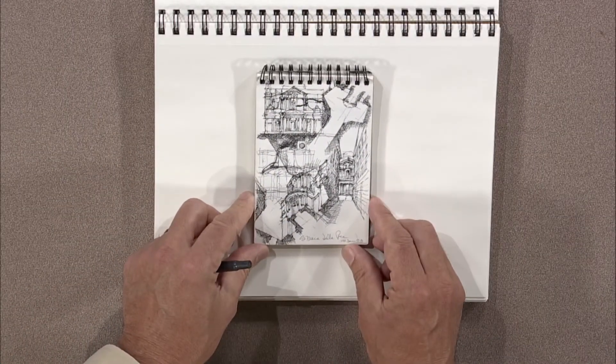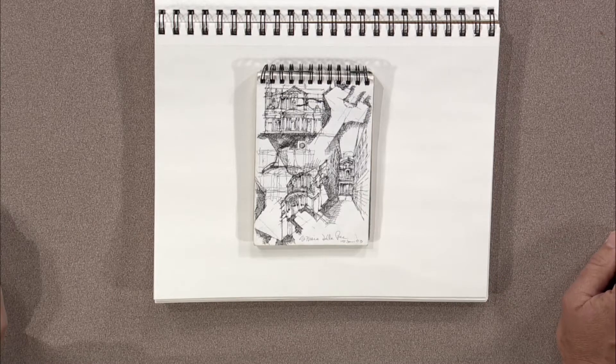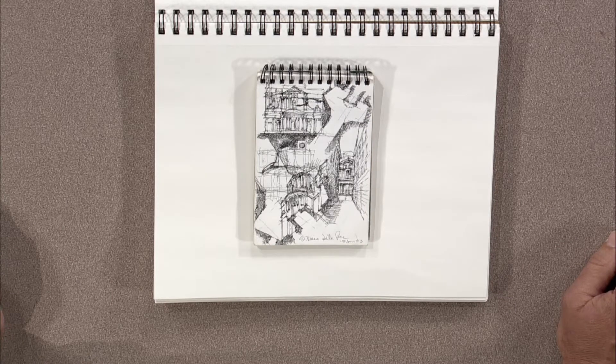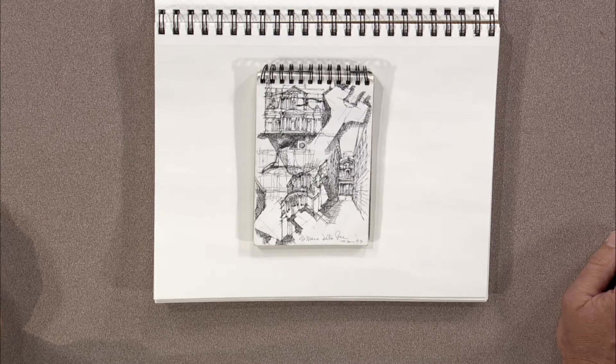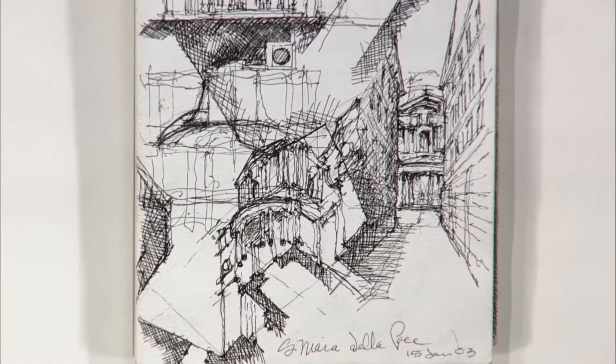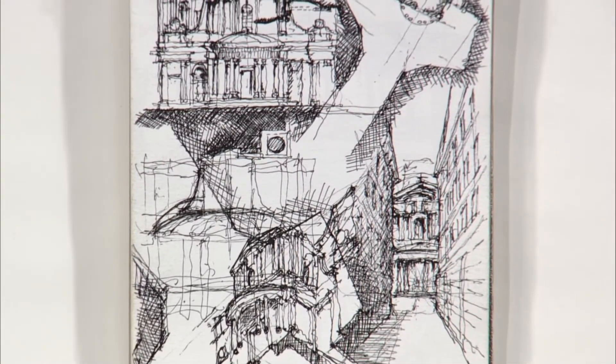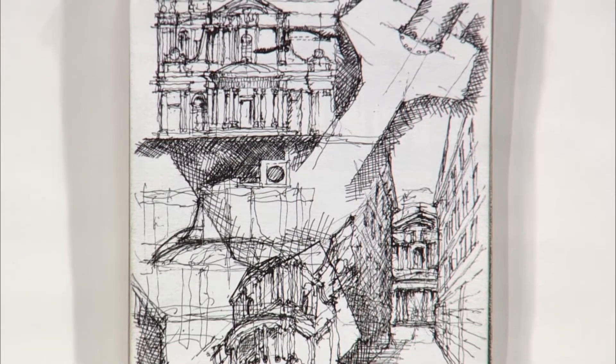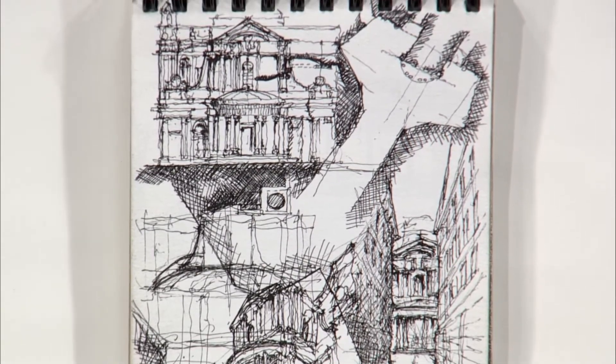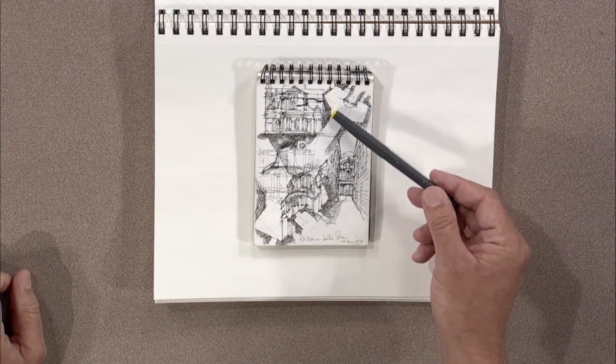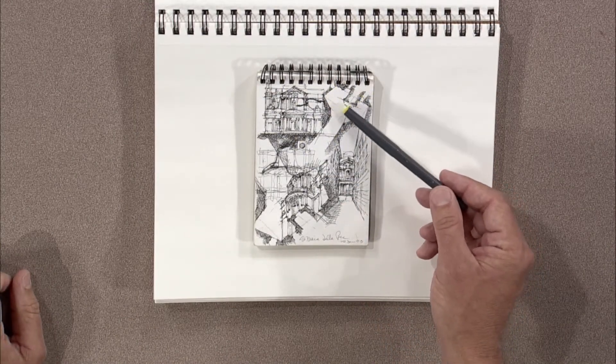So some of the examples I might show you from sketching in place. This is a little church in Piazza in Italy, Santa Maria della Pace. This is a sketch done 15th of January 2003. I recorded that on the bottom of it. But what it does, it shows multiple viewpoints of the church. One is an elevation seen here.